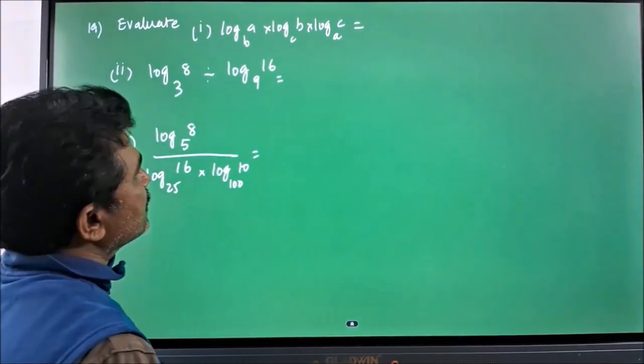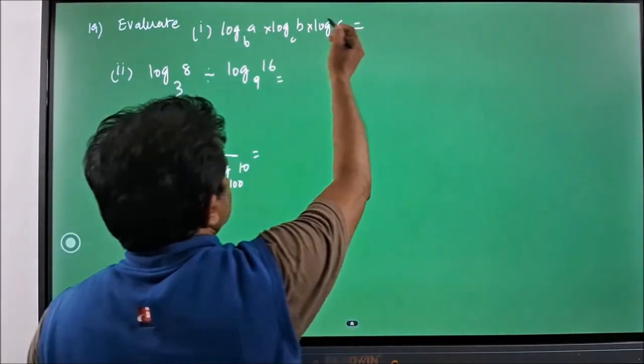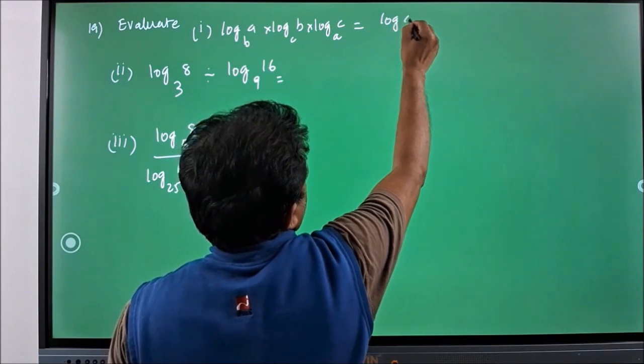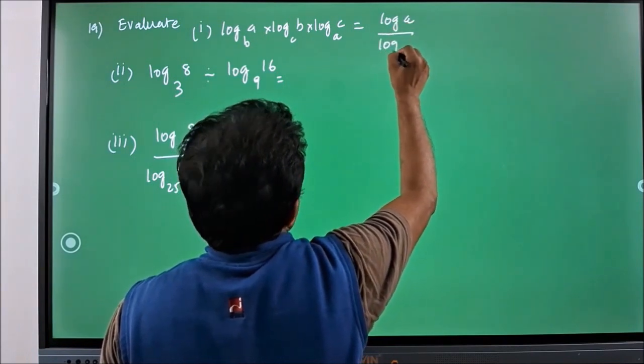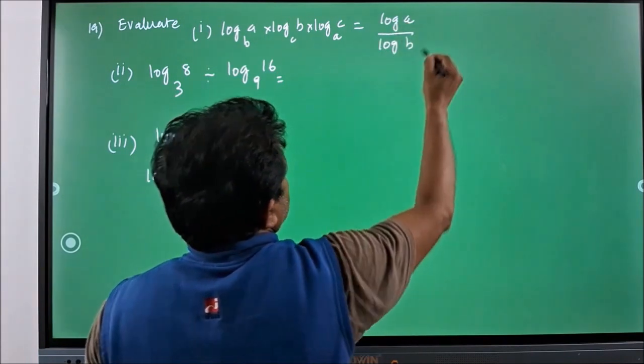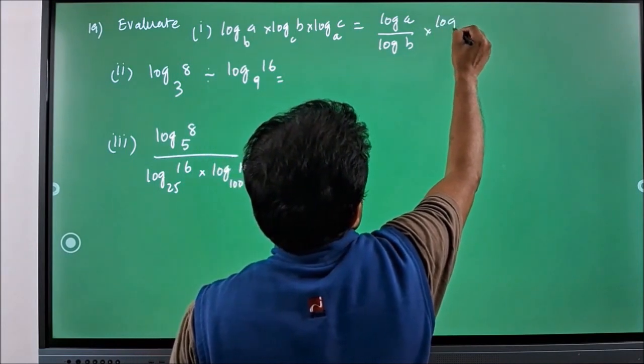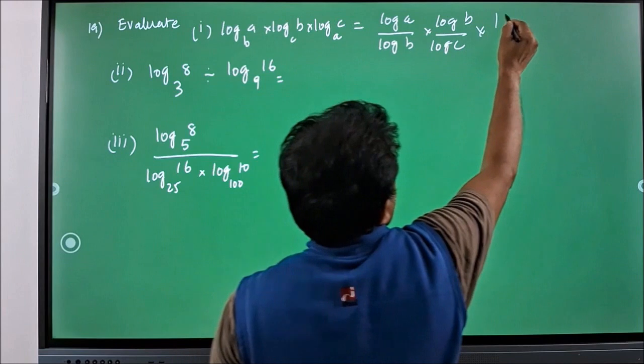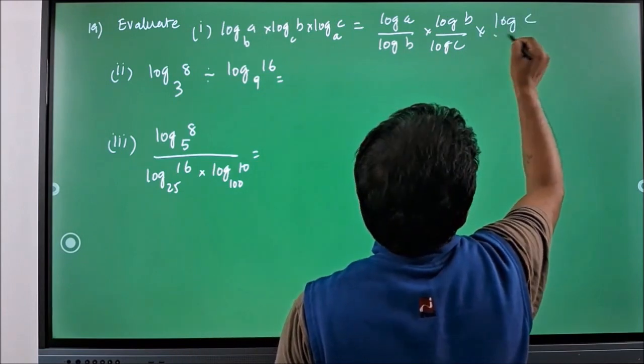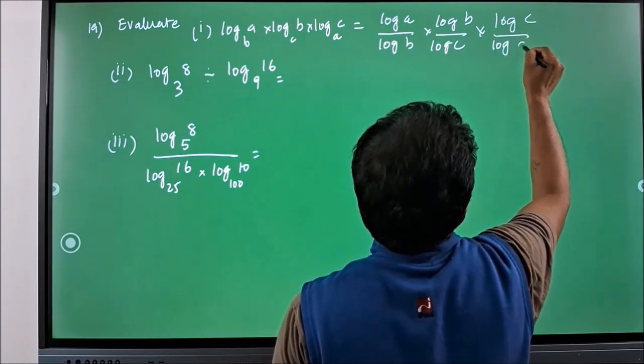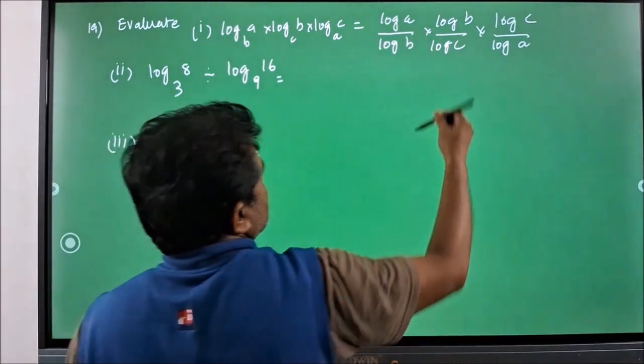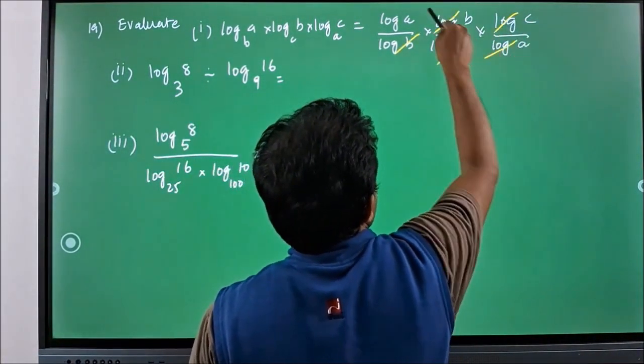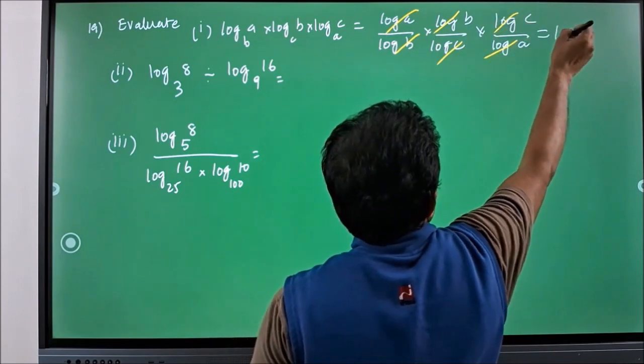First of all, I am considering the first one, which I can split this logarithm function like log A by log B into log B by log C into log C by log A. You have a cancellation of log C log C, log B log B and log A log A. The whole thing will be equal to 1.